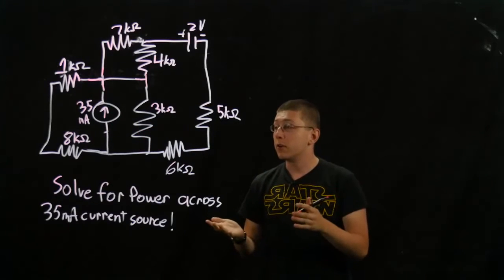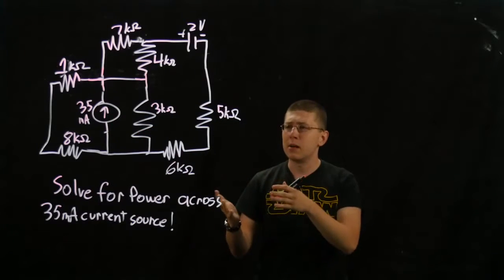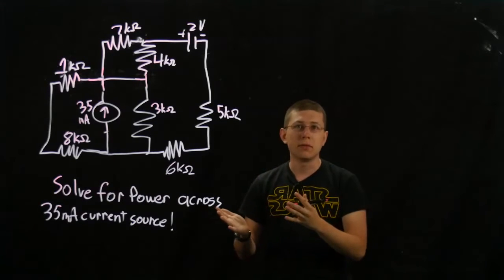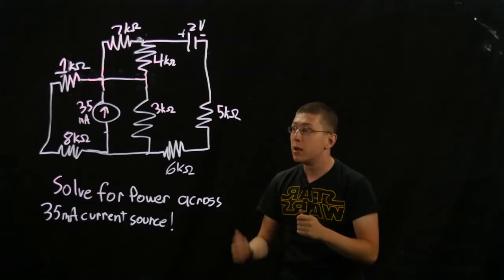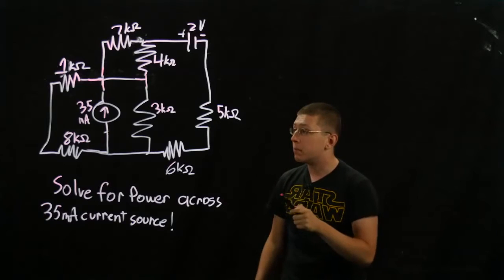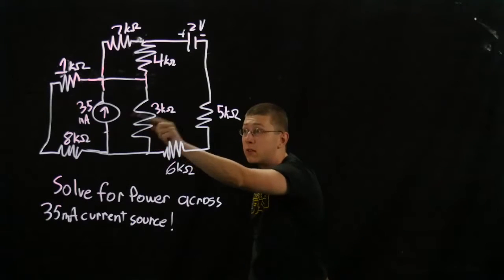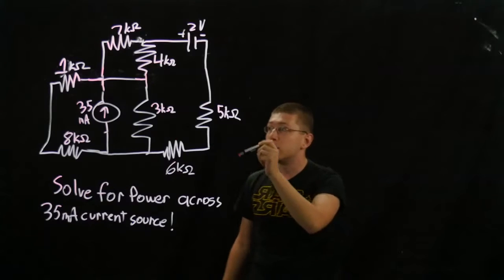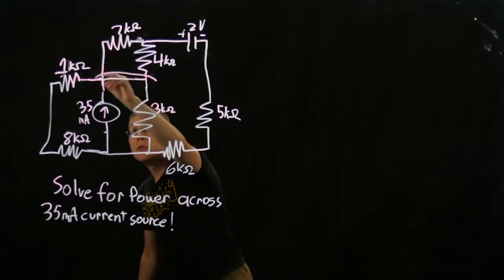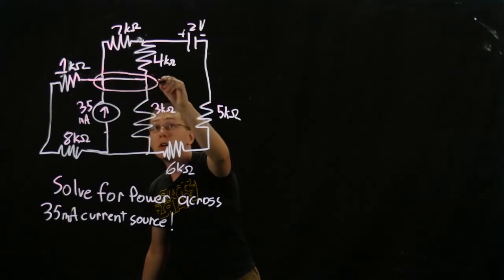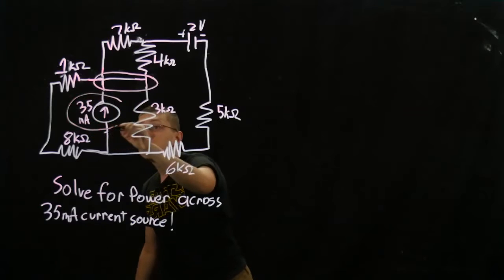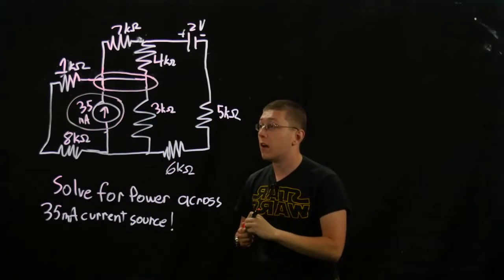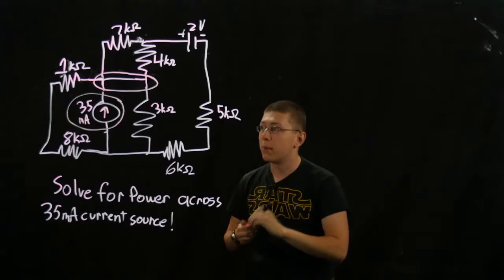Now first, it looks very complicated — lots of resistors — and you kind of suffer from the 'where do I begin, what do I do?' But to find the power across this, we already know the current, so all we really need is the voltage. So we need the voltage across this node — that's what we're solving for the power.